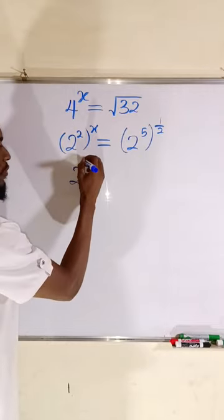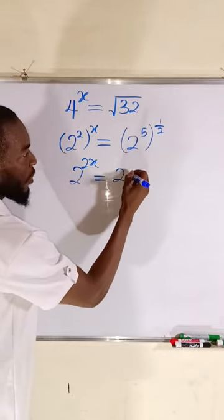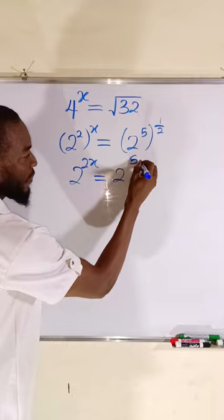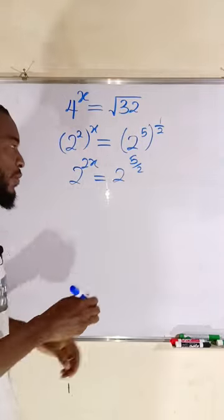We have 2 raised to the power of 2 times x equal to 2 raised to the power of 5 times 1 over 2, which is 5 divided by 2.